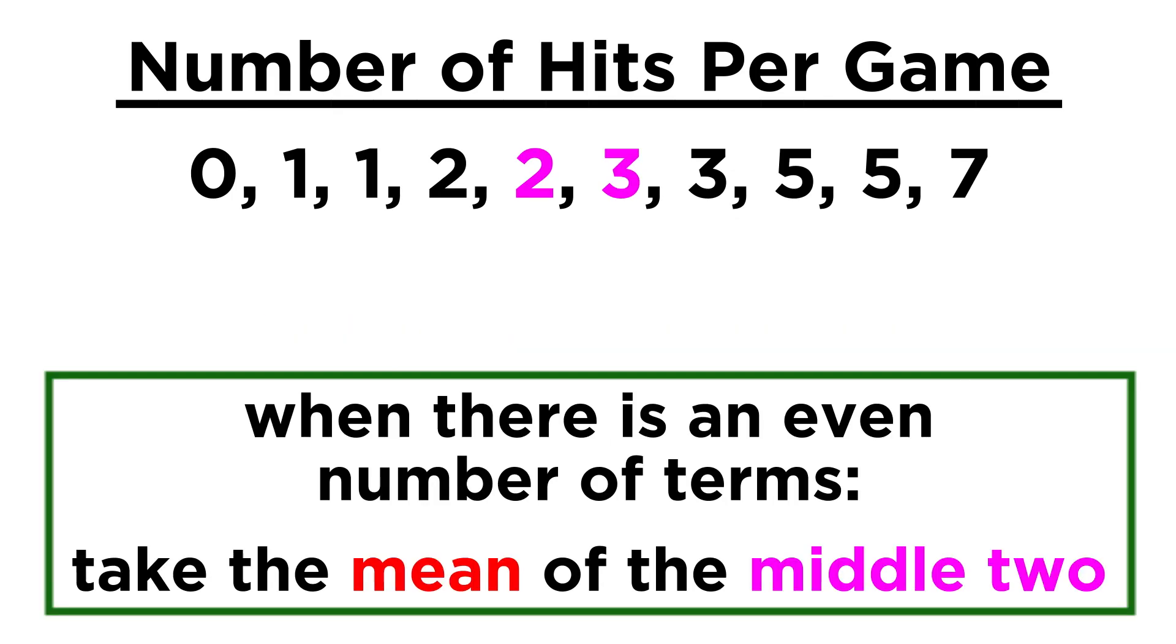If this was not the case, we would have to take the average of the two middle terms. So if the fifth and sixth terms were two and three, the median of the set would be two point five.